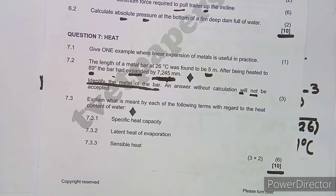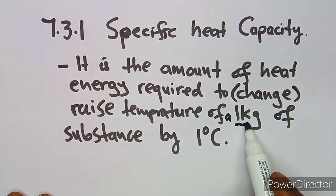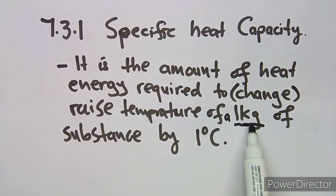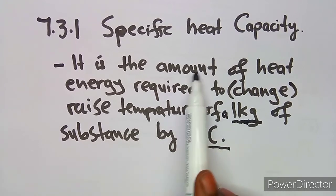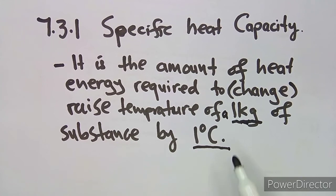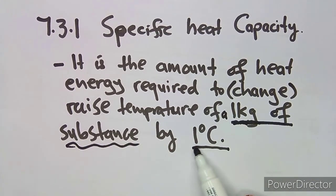Next, question 7.3 asks us to explain what is meant by certain terms with regards to the heat content of water. The first term is specific heat capacity. The specific heat capacity is the amount of heat energy required to raise the temperature of one kilogram of a substance by one degree Celsius.